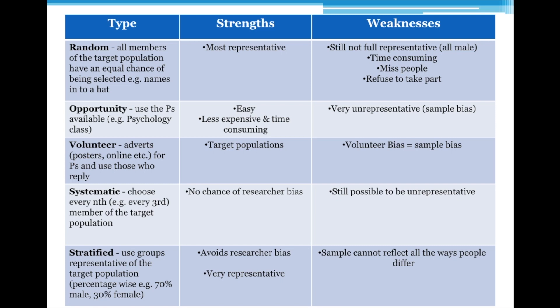Sampling is how you get your participants, and what you're hoping is that your participants are going to be representative. They're going to represent the population they're from for your study, and in your results you're going to be able to apply the findings from your study to other members of that population. This happens across all the sciences.